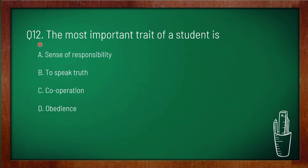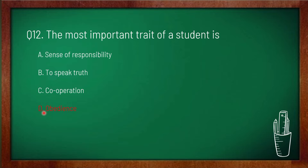Question 12: the most important trait of a student is — option A: sense of responsibility, option B: to speak truth, option C: cooperation, option D: obedience. Option D is correct — the most important trait of a student is to obey, so the answer is obedience.